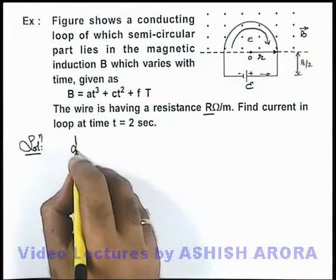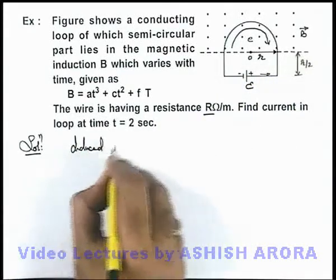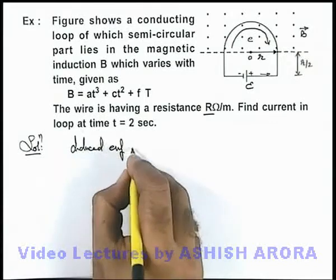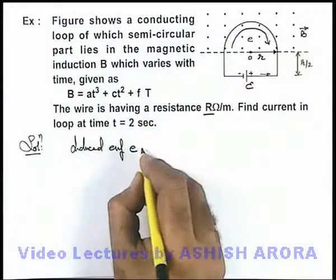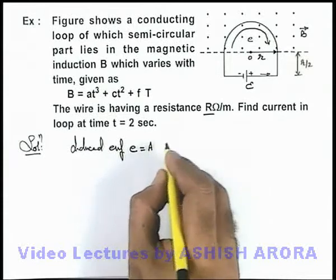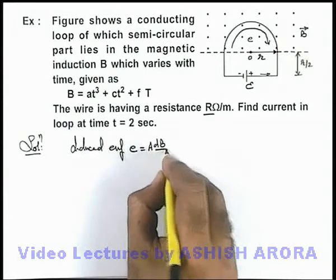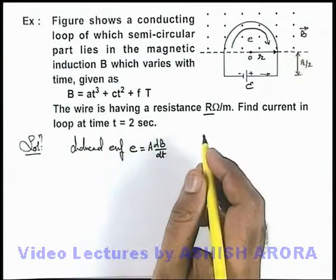So here we can directly write, induced EMF e in the semicircular part. This can be given as the area multiplied by dB/dt, as here it is time varying magnetic field.